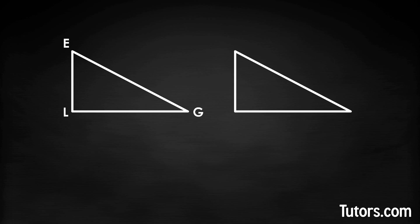Let's look at an AAS theorem example. Here we have two new triangles, triangle LEG and triangle ARM. Notice all the little hatch marks indicating congruent angles and sides. Angle L is congruent to angle A. Angle E is congruent to angle R. Side LG is congruent to side AM.